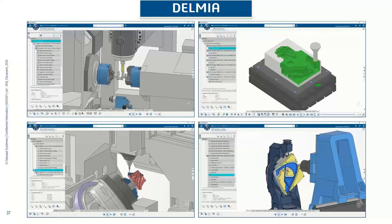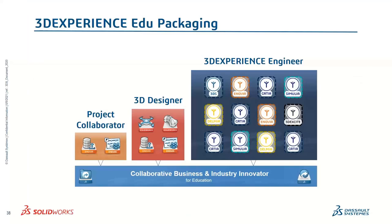Also included are the advanced machining roles and apps from DELMIA to help you rapid prototype your custom parts — 2.5, 3, and 4-axis machining, easily defining tool paths to bring your part to life. For a deeper dive into all of that, we have a handout: the 3DEXPERIENCE EDU Overview ebook, which goes into detail about all the benefits and workflows of our 3DEXPERIENCE EDU packaging.